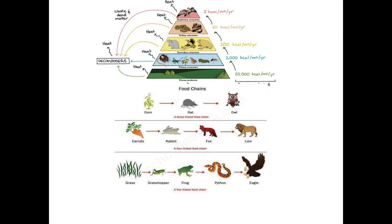This whole process happens in a food chain. A food chain is the interlinked relations between organisms. For example, in an agricultural land, insects are eaten by frogs and frogs are eaten by eagles. This chain of interlinks between producers, consumers, and carnivores is called a food chain.